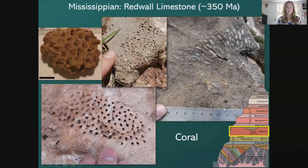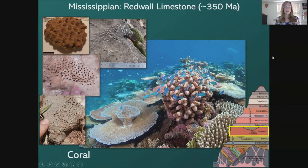Some of the fossils we find in the Redwall are corals, very similar to the corals we think of today. There are different kinds of corals represented here, but they all resemble the kinds we see in modern times.